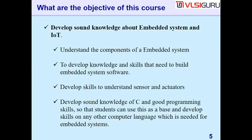The main objective of this course is to develop sound knowledge about embedded systems and IoT. Students will understand the components of an embedded system, develop knowledge and skills needed to build embedded system software, and develop skills to understand sensors and actuators. They will also develop good programming knowledge in C and Python, which serves as a base to learn any other computer language needed for embedded systems.